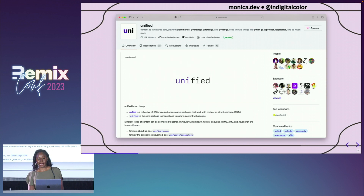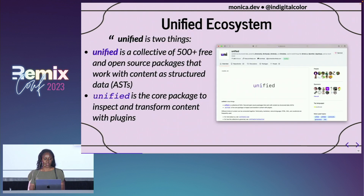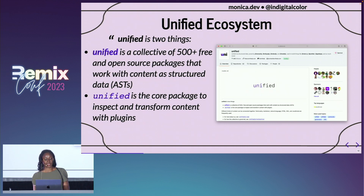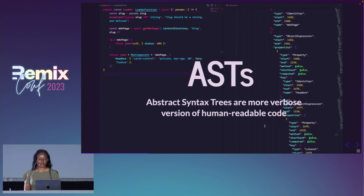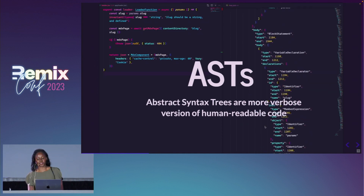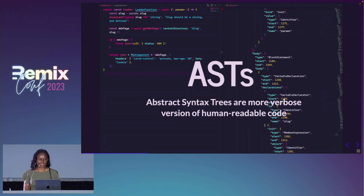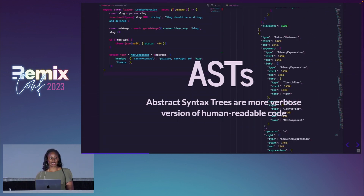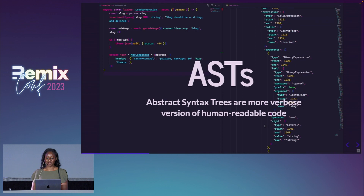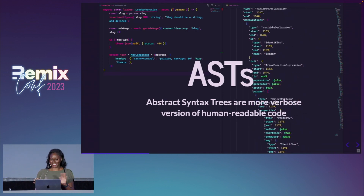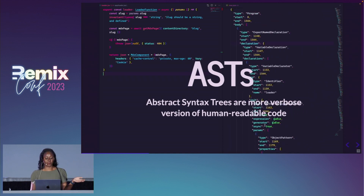If you're interested in using MDX, you should get familiar with Unified. Unified is a huge ecosystem with over 500 different open source packages that allow us to work with content as structured data, also known as abstract syntax trees. It's also a core package used to inspect and transform content with plugins. Abstract syntax trees are more verbose versions of human-readable code — on the left is an example of a loader function, and on the right is that same function in abstract syntax tree representation.